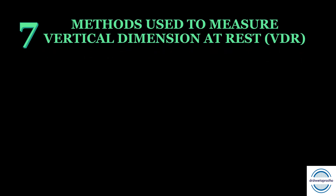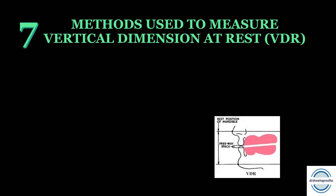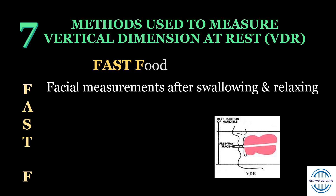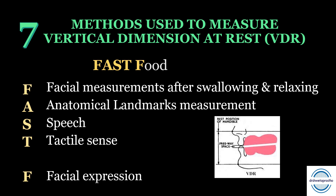The next mnemonic helps you remember the methods used to measure the vertical dimension at rest (VDR) — a very important topic that comes as a long question in theory and is often asked in chair-side viva. The mnemonic is FAST FOOD, giving five methods: F for facial measurements after swallowing and relaxing, A for anatomical landmarks measurement, S for speech, T for tactile sense and patient's comfort, and F for facial expression.